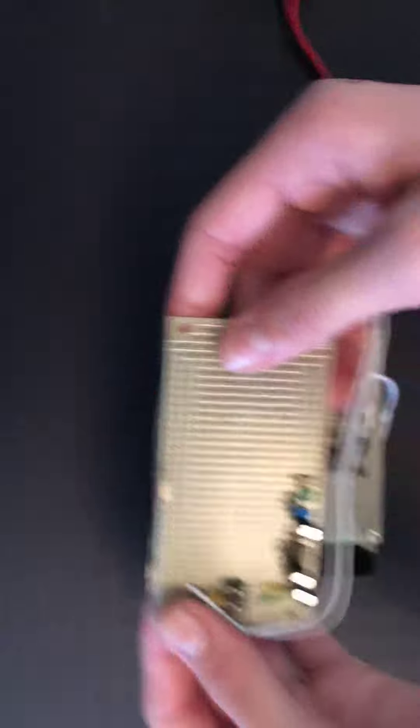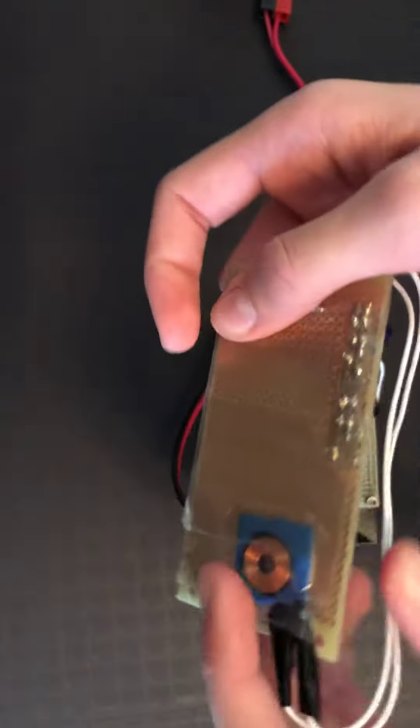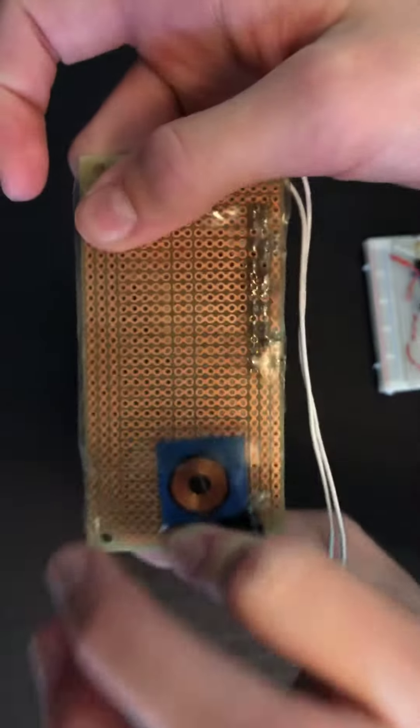This is my receiver circuit, and this is my transmitter circuit. On this side of the receiver circuit, you can see there is an inductor coil.